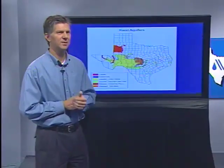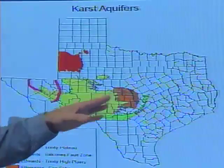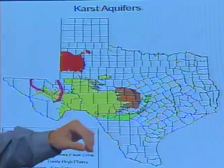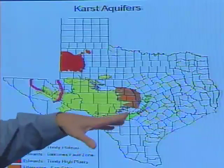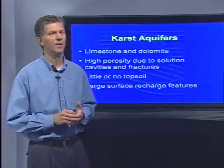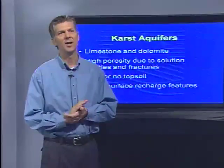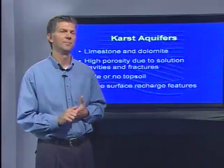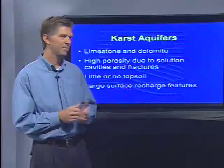Different types of aquifers are considered vulnerable. Karst aquifers — most in the central Texas area, including the Edwards aquifer. Later on, Jeff Haby from San Antonio will discuss issues with the Edwards aquifer and their groundwater system. Karst aquifers are composed of limestone and dolomite; they're often highly fractured with huge cavities, almost like Swiss cheese throughout the aquifer. There's often little or no topsoil and they have large surface recharge features.